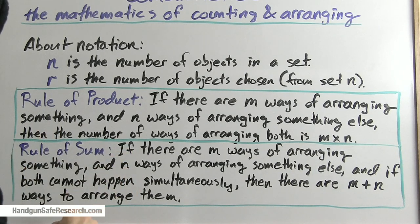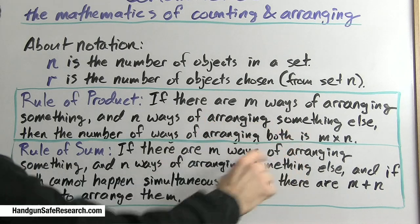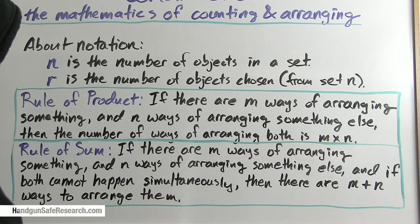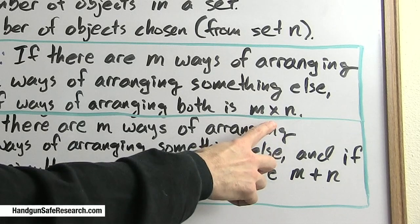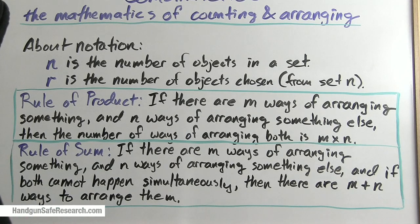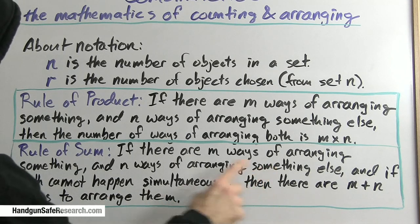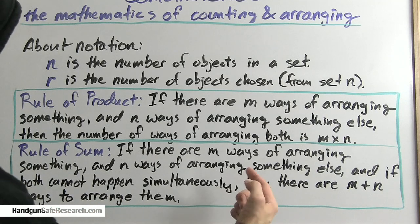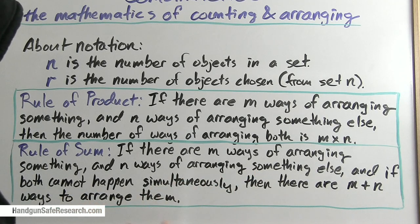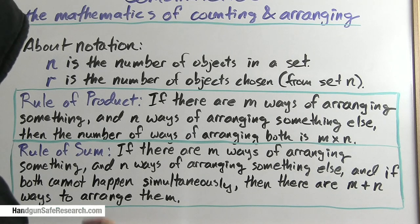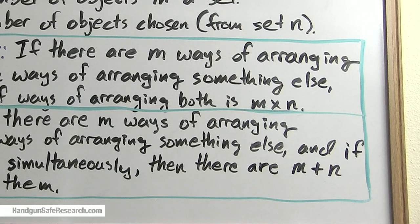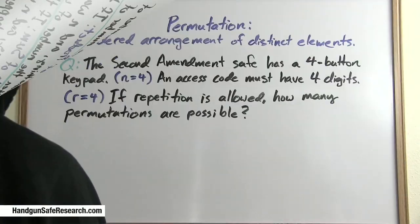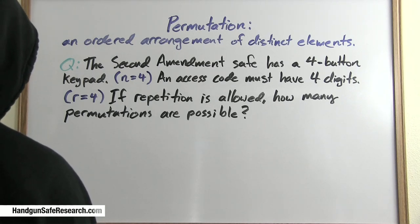I want to mention a couple of rules of counting. The rule of product states that if there are m ways of arranging something and n ways of arranging something else, then the number of ways of arranging both is m times n. The rule of sum states that if you've got one set of choices or the other set of choices, then there are m plus n ways to arrange them.